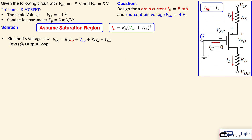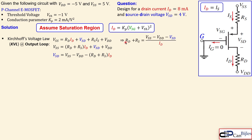Since the gate current is zero, ID equals IS, so we can group RD and RS together. Rearranging, RD + RS equals (VSS − VSD − VDD) divided by ID. Substituting VSS = 5V, VDD = −5V, VSD = 4V, and ID = 8 mA, we get RD + RS = 750 ohms.